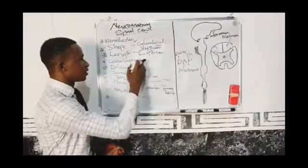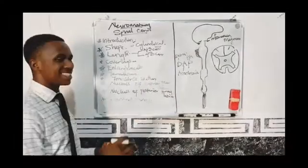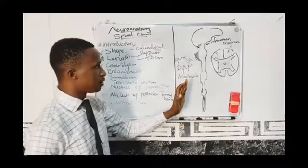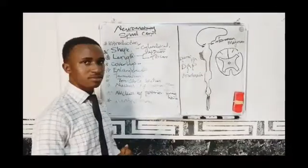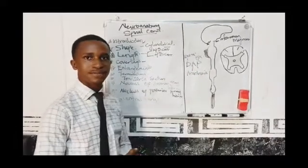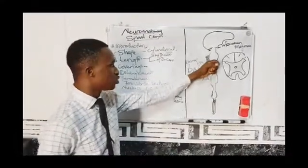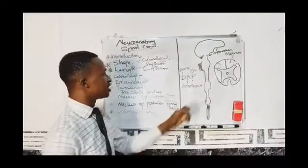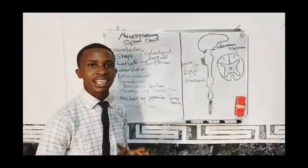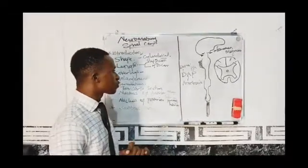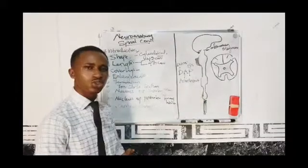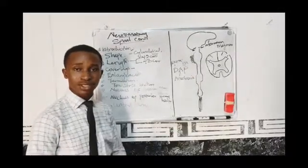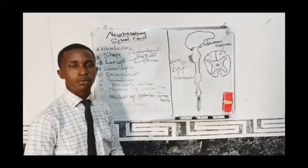After talking about the coverings of the spinal cord, we now move to the enlargements of the spinal cord. As you can see from the diagram, there are some enlargements. The enlargement found in the cervical region is called the cervical enlargement, and the enlargement found in the lumbar region is called the lumbar enlargement. The cervical enlargement is important for the formation of the brachial plexus.